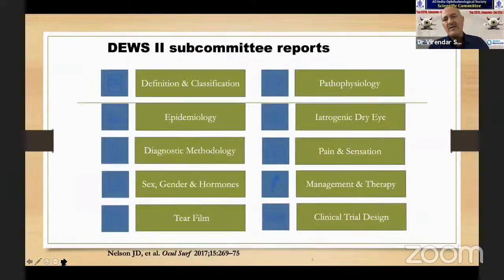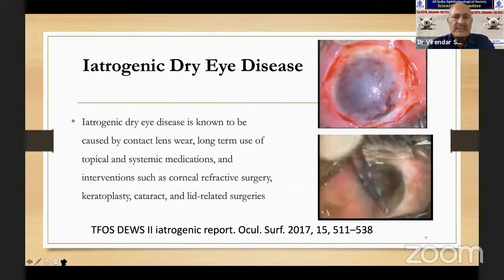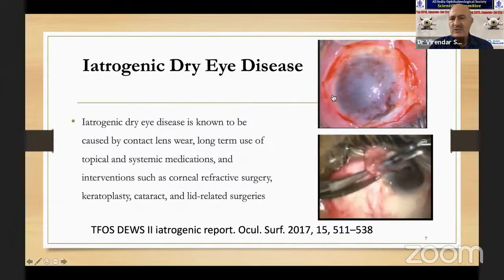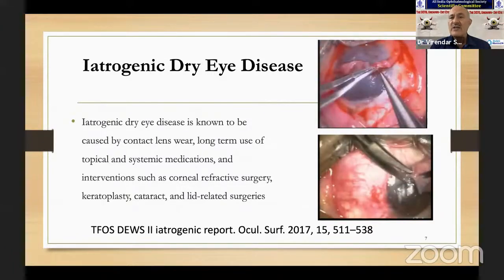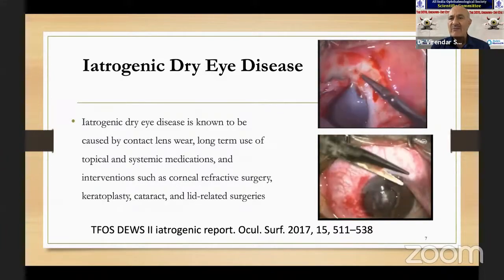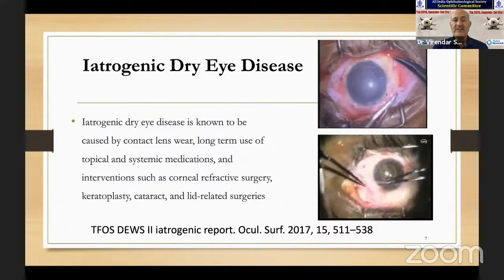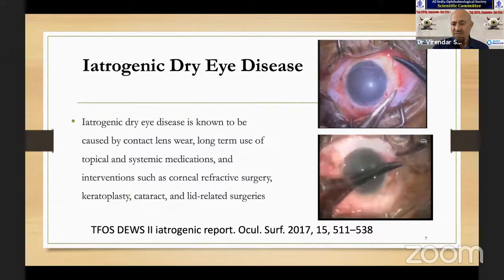A total of 150 clinicians, basic scientists, and industry experts participated, with 11 subcommittees working on different aspects. I worked on iatrogenic dry eye at that time, and today I'm going to talk a little about that — post-operative dry eye being one of the iatrogenic causes. When we do surgeries, there are sometimes known and unknown factors. For example, we do extensive dissection of the corneal surface epithelium and sub-epithelial plexus, yet dry eye is not commonly encountered in those patients.